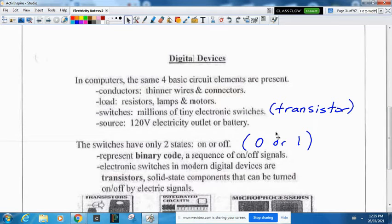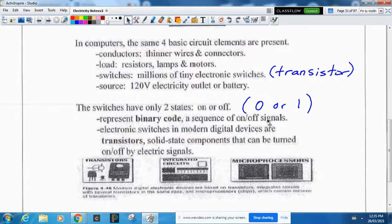The switches have only two states: on or off, zeros or ones. This is known as binary code or machine code. These electronic switches in modern digital devices are called transistors.